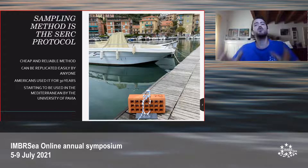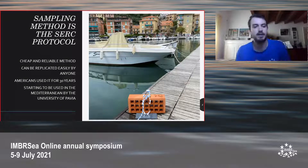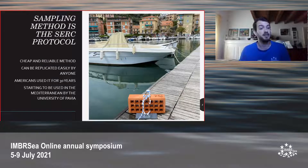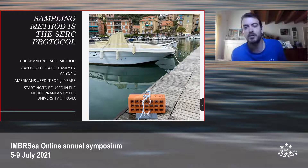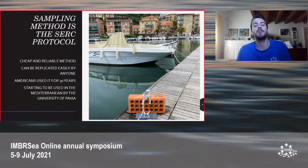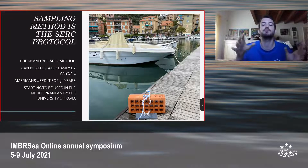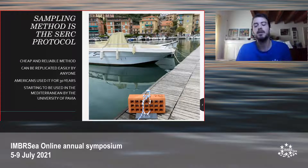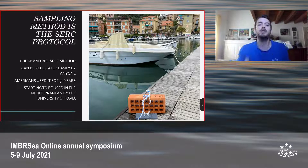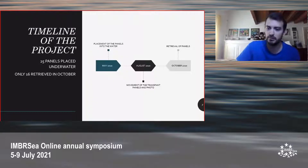But how do we test this? Our sampling method is the SERC protocol. It was first used by the Smithsonian Environmental Research Center — that is why SERC. In America, they used it for 30 years sampling the west and east coast of the United States. It is a cheap and reliable method and anyone can replicate it. The structure is formed by a PVC panel with sandpaper on the bottom to facilitate the recruitment of species and to mimic the recipient region of the NIS. A brick was put over it to keep it underwater, and a rope attached it to the substrate. This method started to be used in the Mediterranean, first by the University of Pavia, which I am collaborating with.